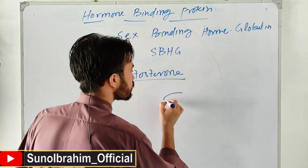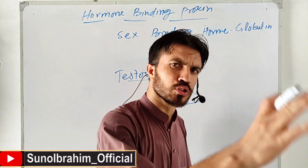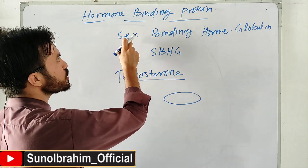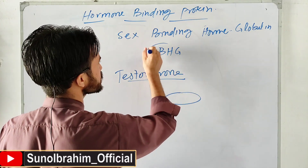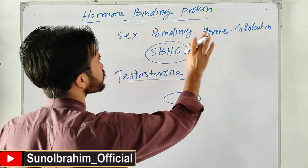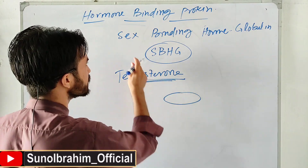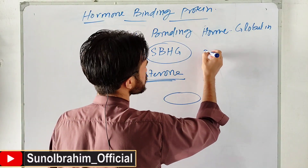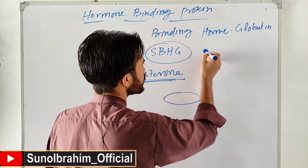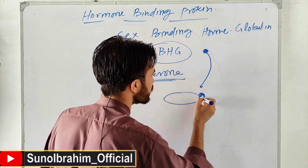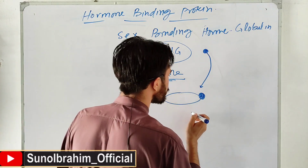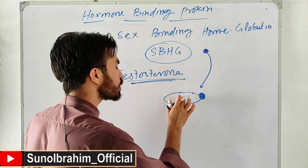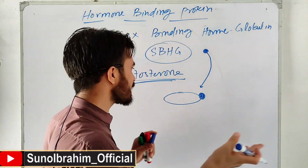Testosterone is lipophilic - it cannot dissolve in blood easily on its own. The liver produces SHBG - Sex Hormone Binding Globulin - a specific protein. SHBG binds to testosterone. When SHBG binds testosterone, the testosterone's solubility in blood increases - it can now travel in the bloodstream without binding too heavily to tissues.